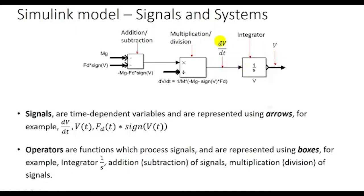If the input is the rate of change of velocity, then the output is the integration of this — therefore it is the velocity signal. Other common operators are the multiplication or division operator, receiving two inputs and producing the output as the time-wise division of the input signals. Another common operator is the addition operator, receiving two inputs and producing the output as the time-wise addition or subtraction of the input signals.